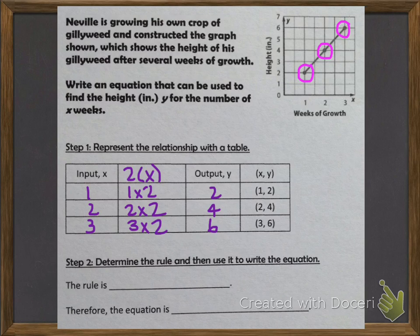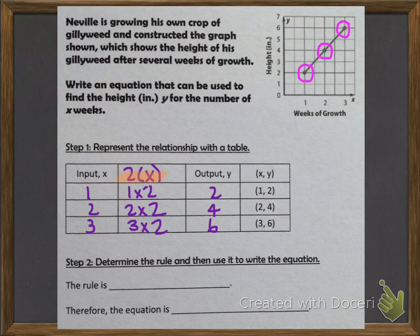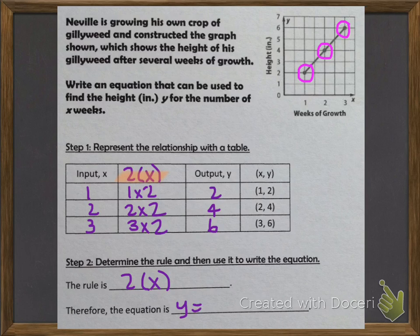Step 2 is to determine the rule and then use it to write the equation. We just found the rule — it was 2 times x, because every time to find the output or the y variable, we took the input or x and multiplied it by 2. So the rule is 2 times x. To write our equation, we simply put y equals 2 times x.